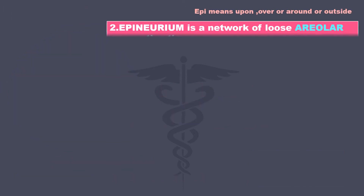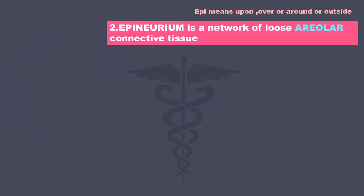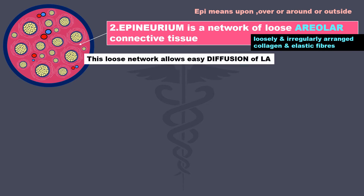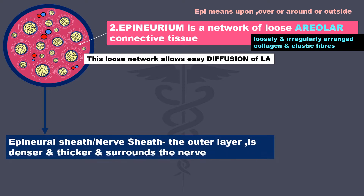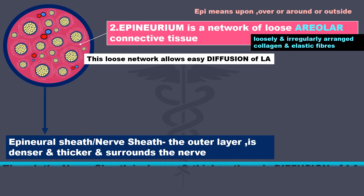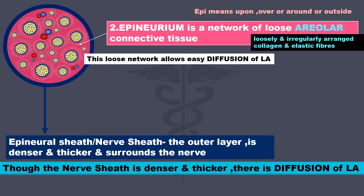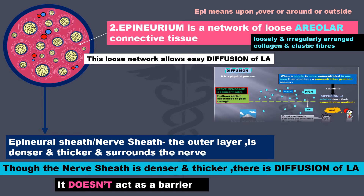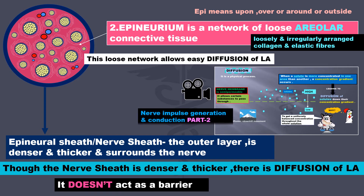Epineurium is a network of loose areolar connective tissue, made of loosely arranged collagen and elastic fibers. This loose network allows easy diffusion of LA. The epineural sheath, the outer layer, is denser and thicker and surrounds the nerve. Though the nerve sheath is denser and thicker, there is still diffusion of LA — it does not act as a barrier. For more about diffusion, you can watch part 2 of the video on nerve impulse generation and conduction.